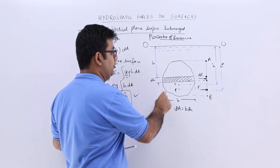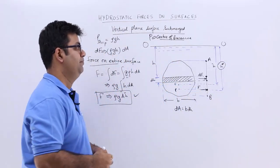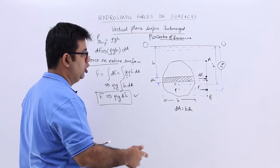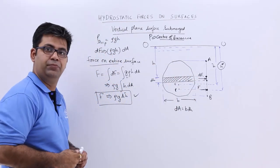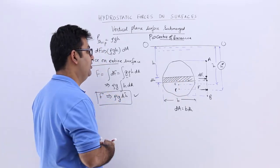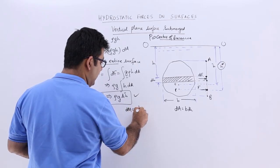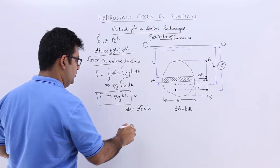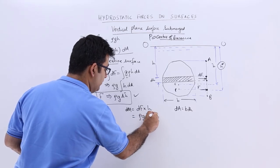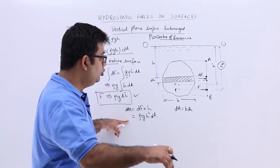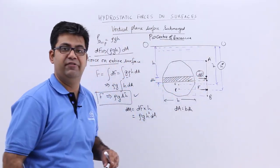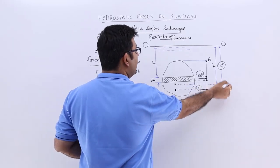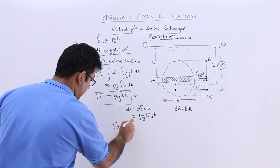Now we need to find the location of the center of pressure, meaning we need to find the value of H-star. To do this, let us find the moment of this force about the free surface. The moment of force DF about the free surface is DM = DF into H. Since DF = ρgH · DA, this gives ρgH² · DA. For the entire surface, the total moment is F into H-star.